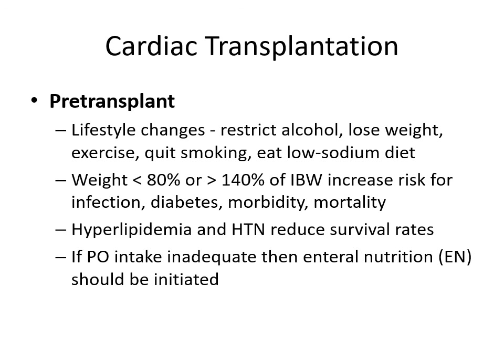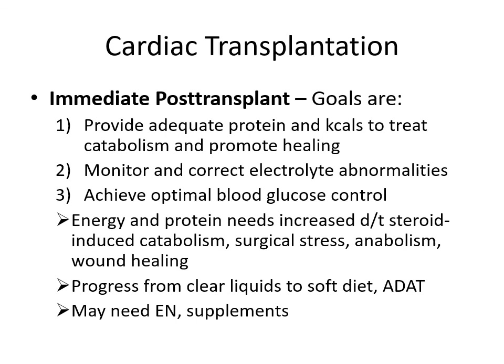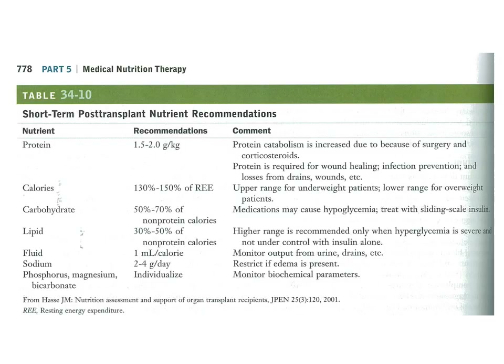For immediate post-transplant, our goals are to provide adequate protein and calories to treat catabolism and promote healing, monitor and correct electrolyte abnormalities, and achieve optimal blood glucose control. Energy and protein needs are increased due to steroid-induced catabolism, surgical stress, and anabolism and wound healing. We want the patient to progress from clear liquids to a soft diet as soon as possible, and may need to use enteral nutrition or supplements to maintain adequate intake. The short-term post-transplant nutrient recommendations show higher protein, higher calories, adjusted carbs and lipids, adequate fluid, and individualized sodium, phosphorus, magnesium, and bicarbonate.